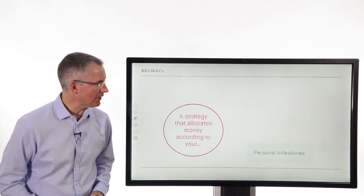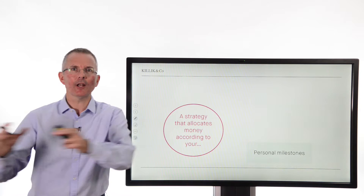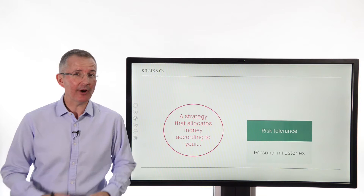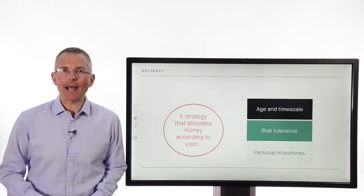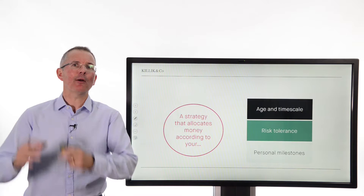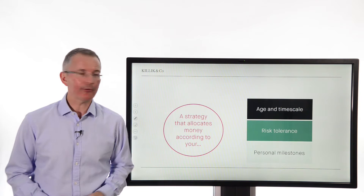In a nutshell, what are we trying to achieve here? This is a strategy that allocates money according to three things essentially. Your personal milestones — those are your goals going out into the future. Number two, your risk tolerance. Some people are naturally comfortable with risk, others aren't. Some people need to be told to take more risk, others don't. And number three, age and timescale. People who are very young will have a completely different outlook from somebody who's about to retire. So, three ingredients in that melting pot.